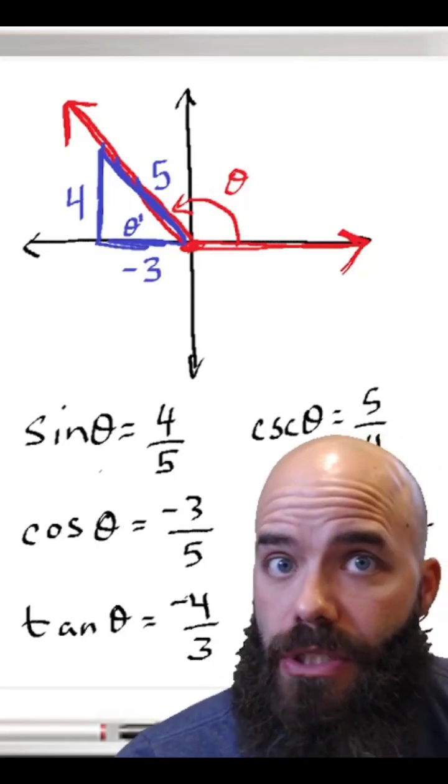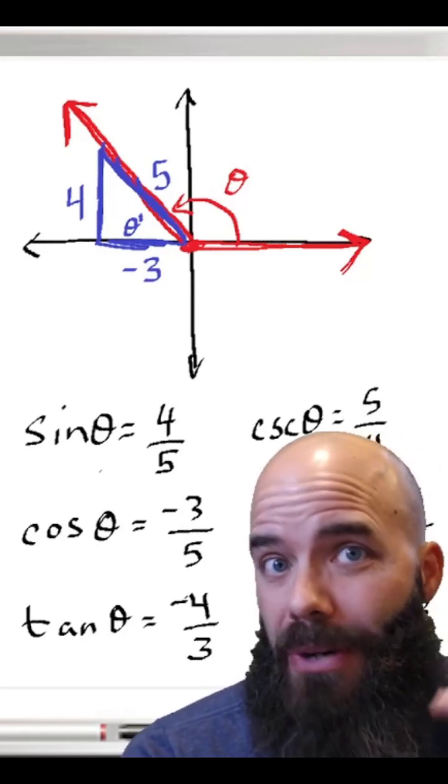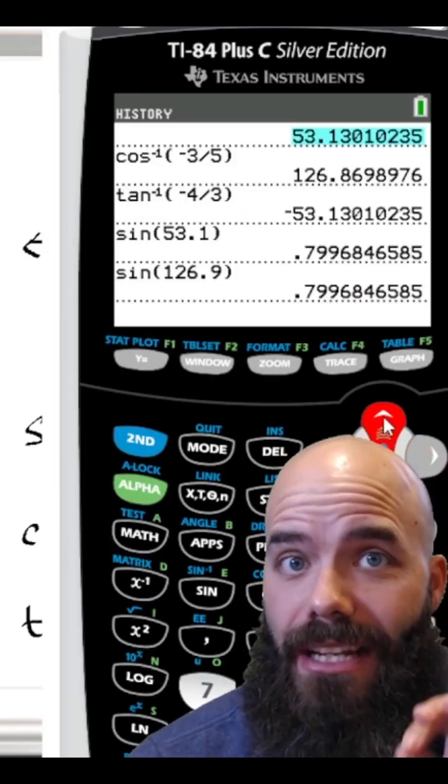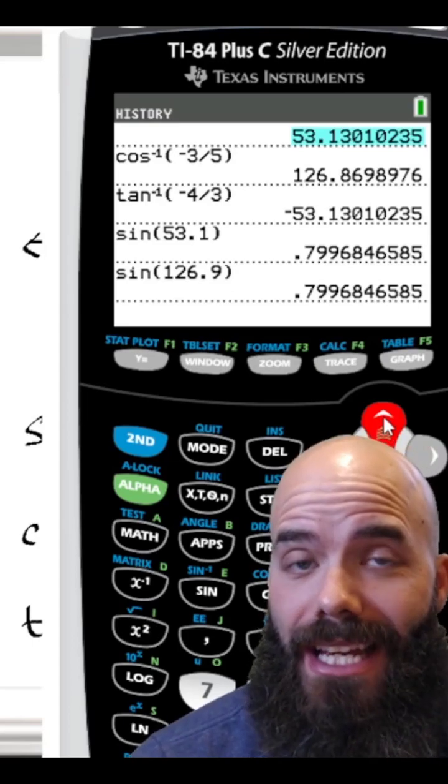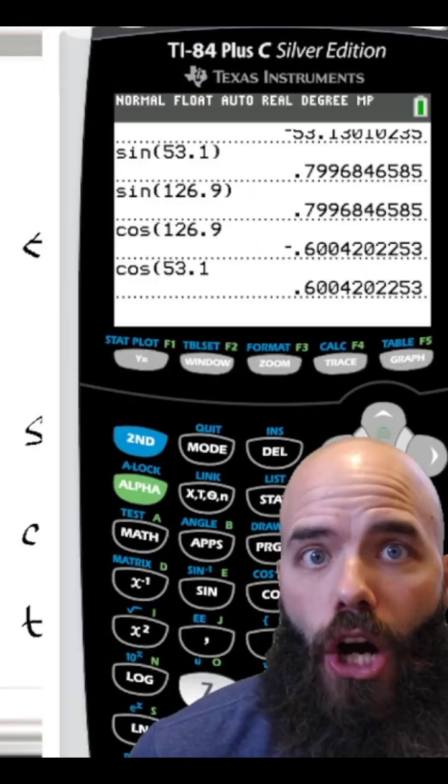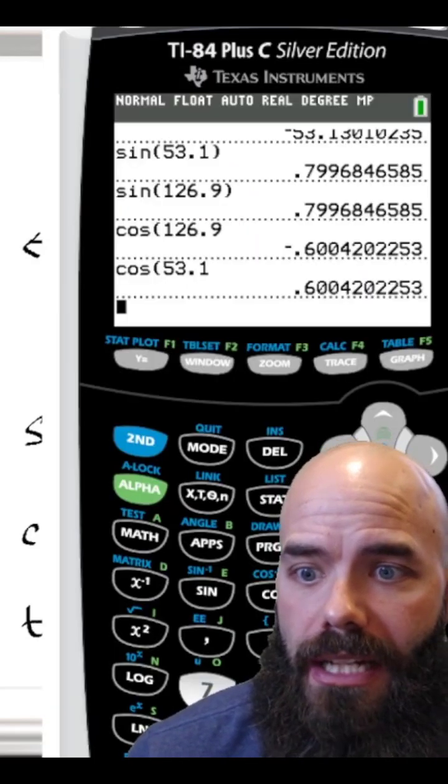Now when we found this originally we use SOHCAHTOA in the reference angle, but let's see why we could do that. Sine of theta and sine of theta prime are the exact same if the terminal side is in quadrant two. How about the cosine? It all depends on where the terminal side lies.